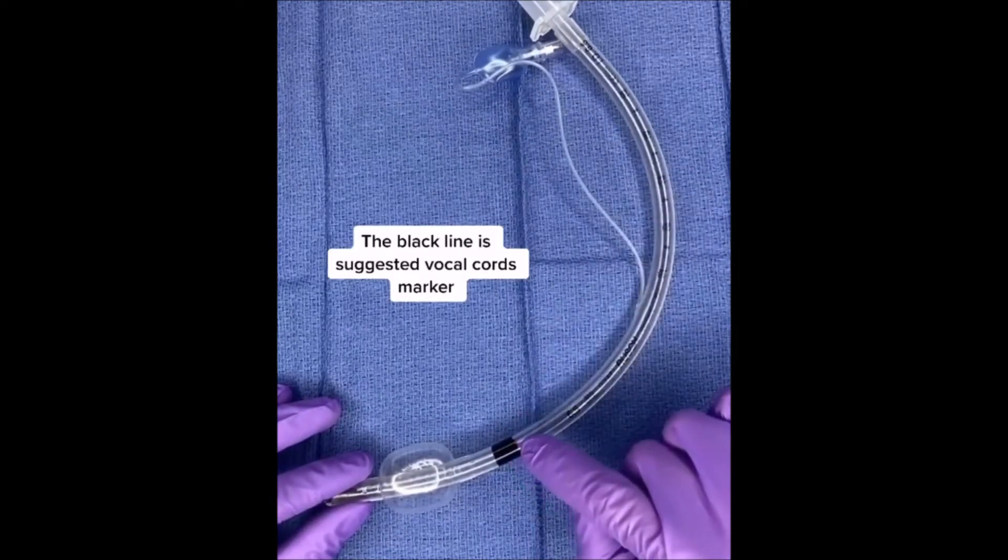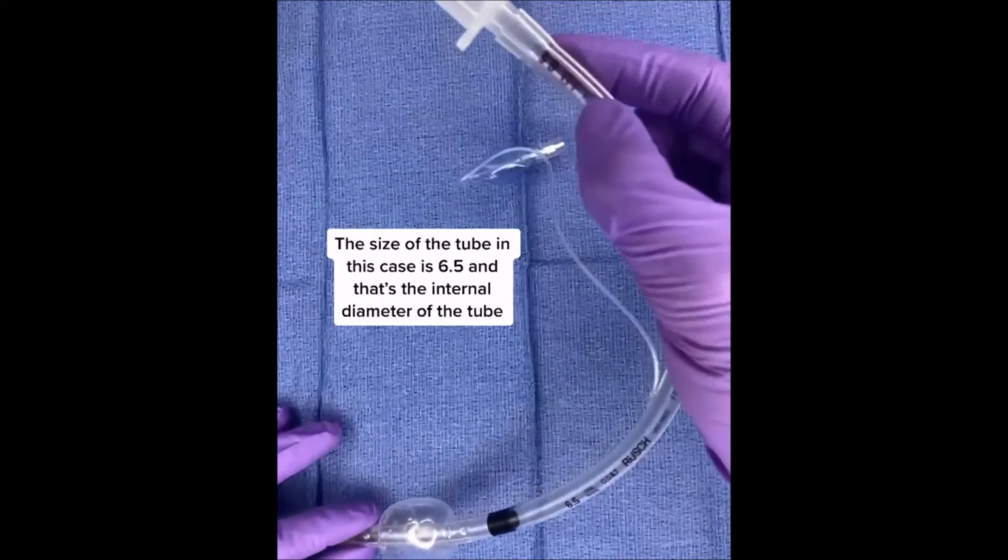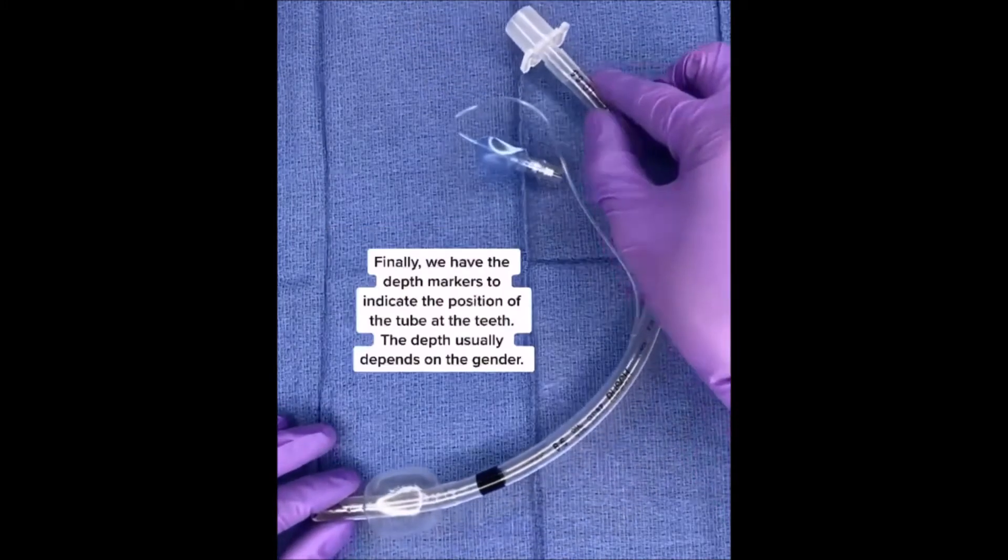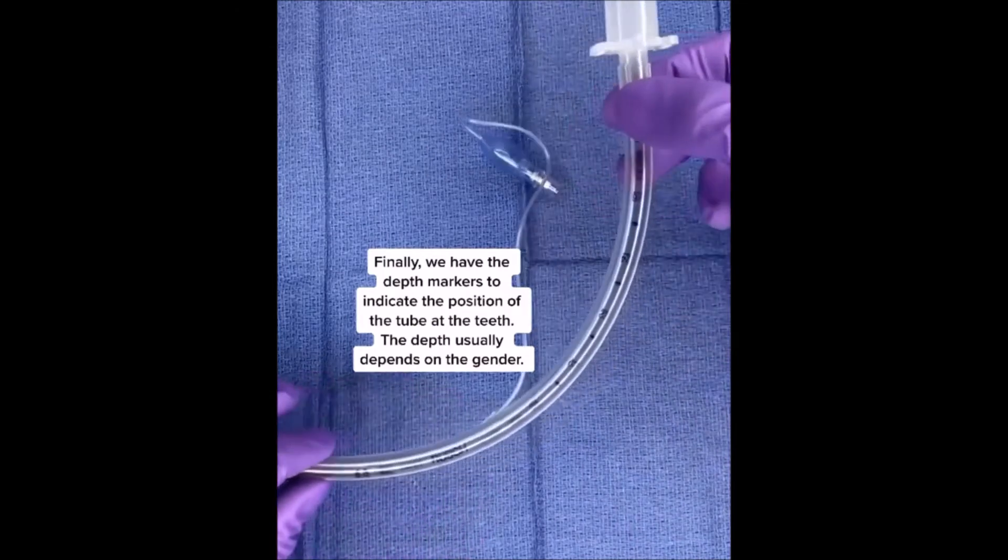The black line is a suggested vocal cords marker. The size of the tube in this case is 6.5, and that's the internal diameter of the tube. Finally, we have the depth markers to indicate the position of the tube with the teeth. The depth usually depends on the gender.